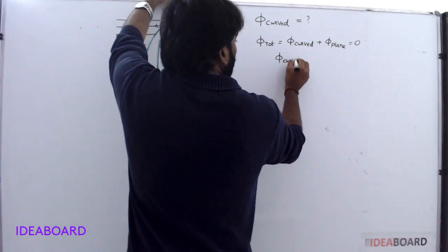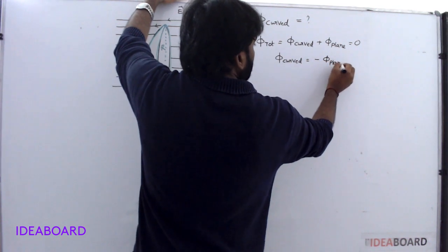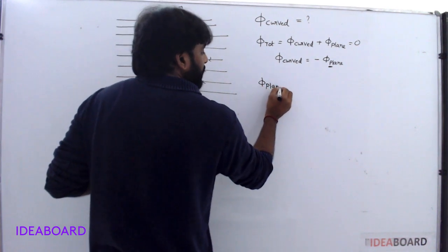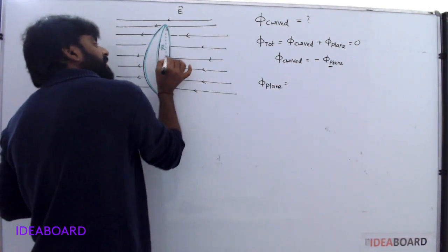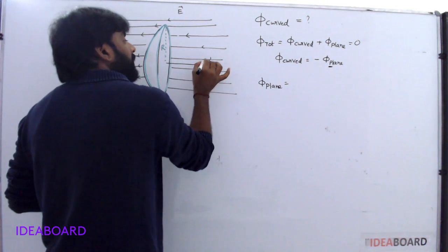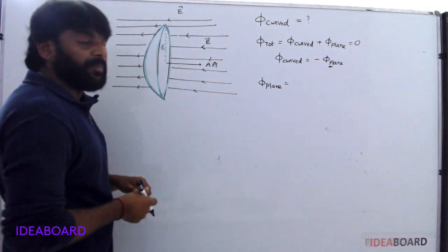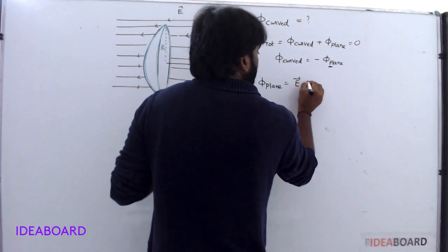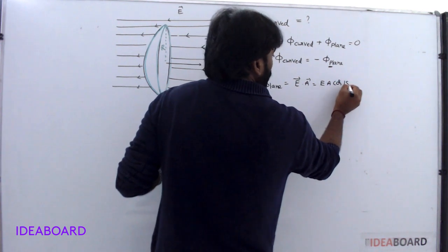Flux through curved surface is equal to minus flux through plane. First, find the flux through the plane. The plane surface normal direction is outwards, and the field direction is in the opposite direction, so you write E dot A equals E A cos 180 degrees.